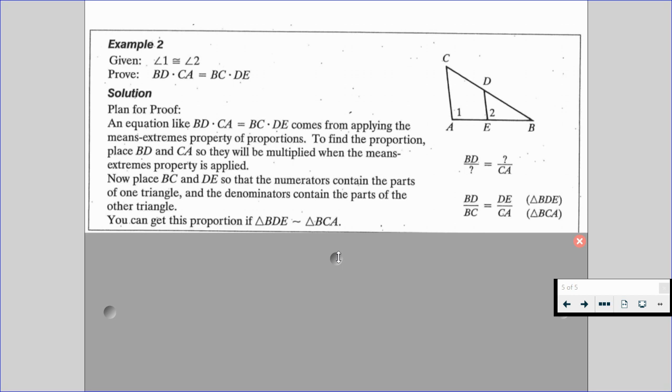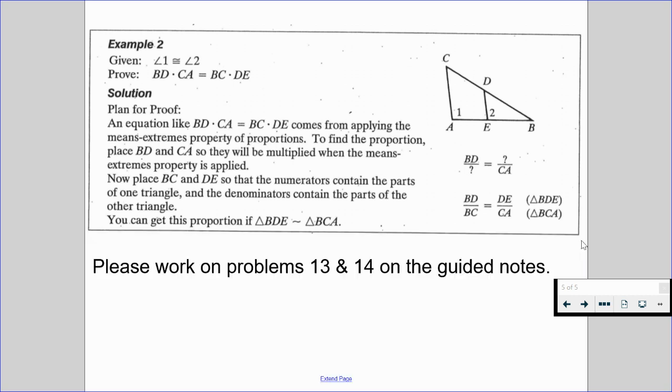And from here, you can get this proportion if we're able to know that triangle BDE is similar to triangle BCA. So that's a pretty good plan for how we're going to tackle this proof. And you're going to be tackling this proof for problem number 13, and then separately for problem number 14, you're going to have another proof. So please work on problems 13 and 14 on the guided notes.